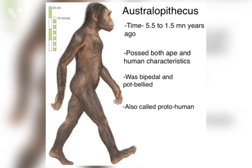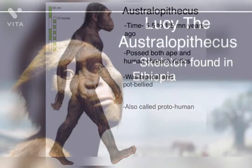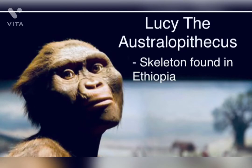They were bipedal, that is they were able to walk upright, and we can say that at this stage our ancestors started walking. Now let's meet Lucy the Australopithecus. She is known as the mother of mankind and her skeleton was found in present-day Ethiopia.